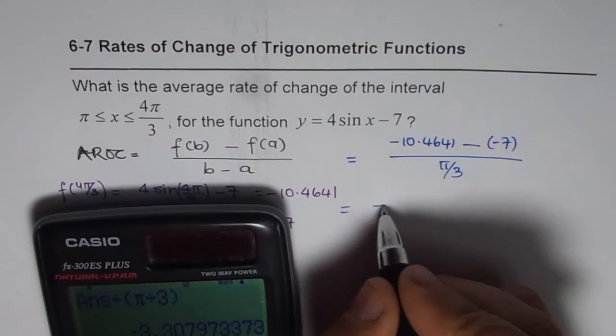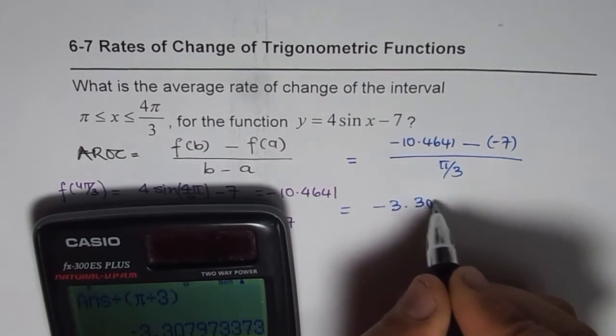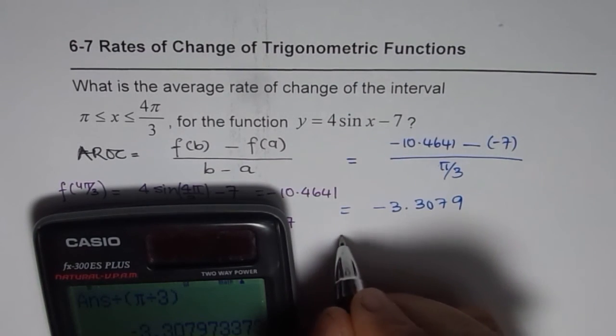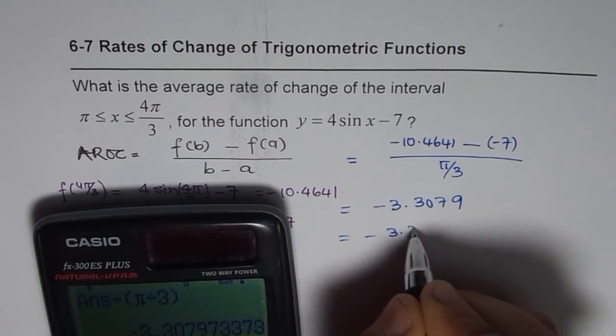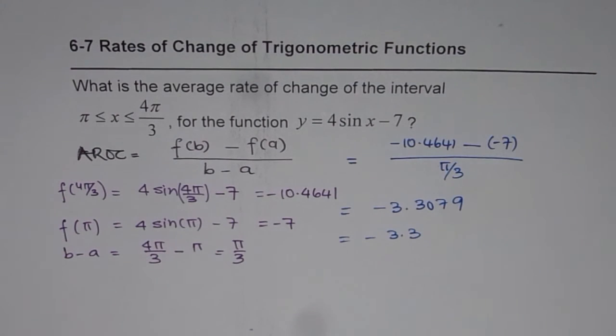So it says -3.3079. So that is approximately -3.3, so the instantaneous rate of change at this point is -3.3.